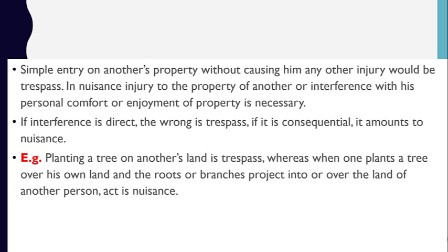For example, planting a tree on another's land is trespass — directly going to someone else's land and planting a tree without permission involves direct physical interference. But when one plants a tree on their own land and the roots or branches project into or over the land of another person, this act is nuisance. You cannot stop a tree's natural growth — so if its roots or branches enter the neighbor's property and damage their view, you have not physically interfered with their land, but your act on your own property is causing damage to others. That is nuisance.